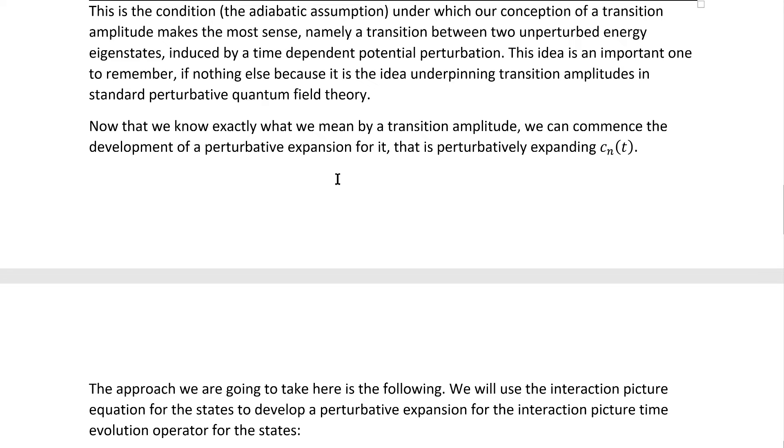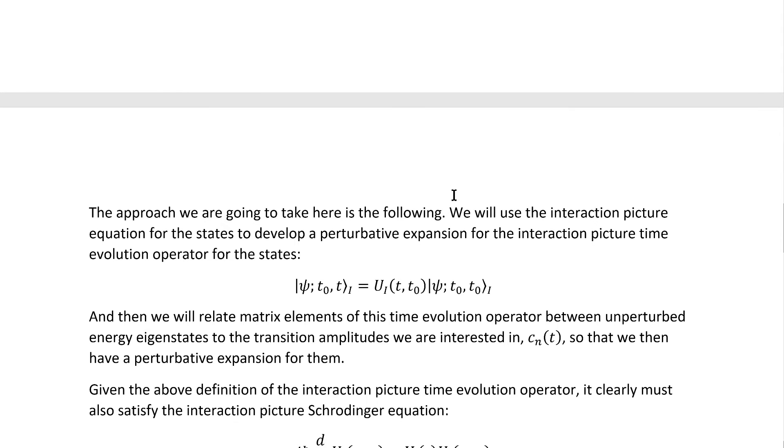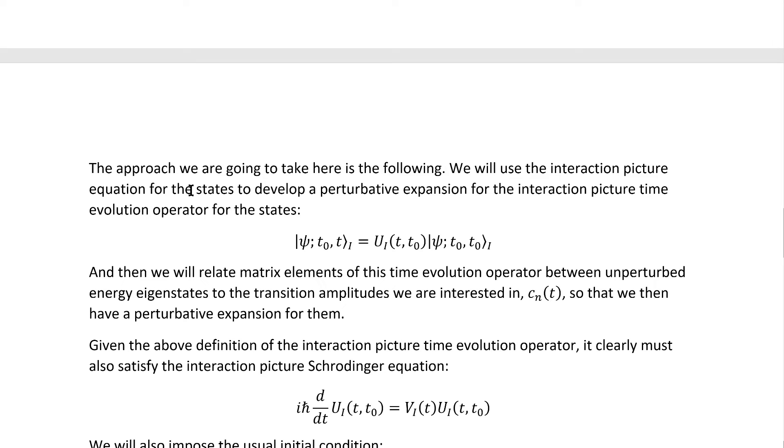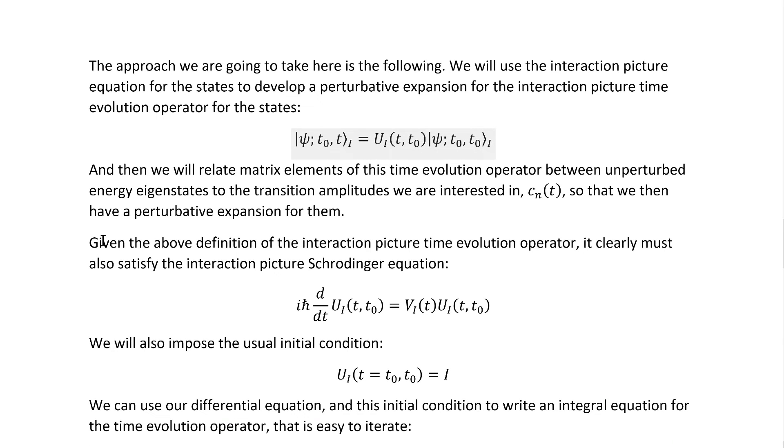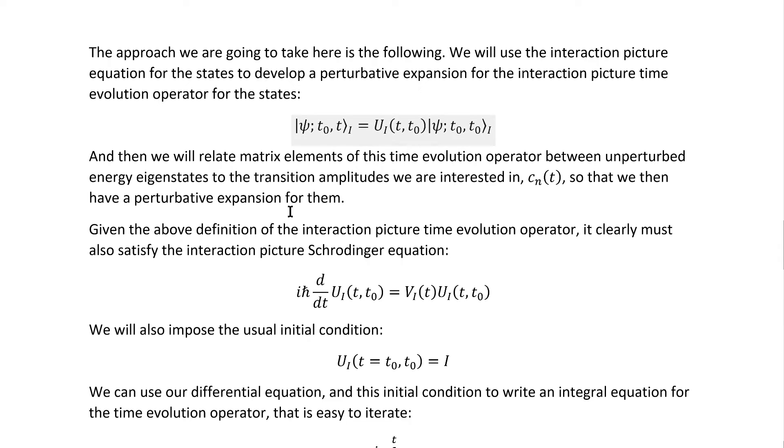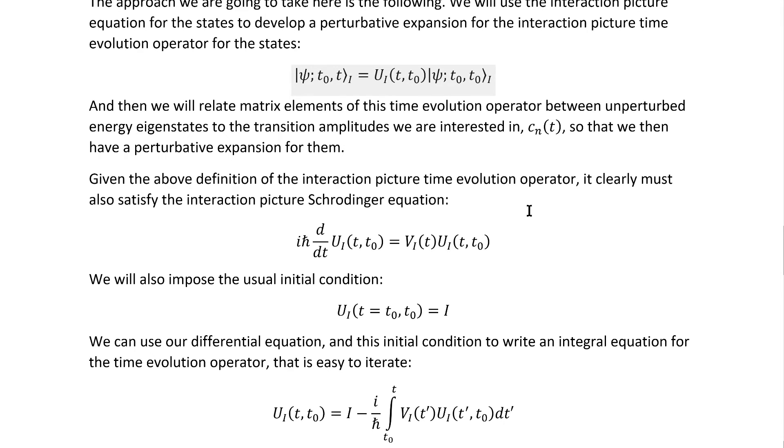Now that we know exactly what we mean by a transition amplitude, we can commence the development of a perturbative expansion for it, that is, finding a perturbative expansion for CN(t). The approach we're going to take here is the following. We will use the interaction picture equation of states to develop a perturbative expansion for the interaction picture time-evolution operator for the states, namely this, and then we will relate matrix elements of this time-evolution operator between unperturbed energy eigenstates to the transition amplitudes we're interested in, the CN(t)'s, so that we then have a perturbative expansion for them.